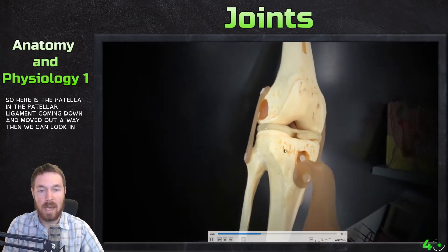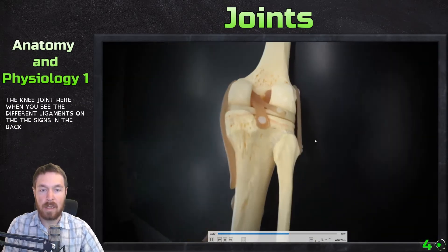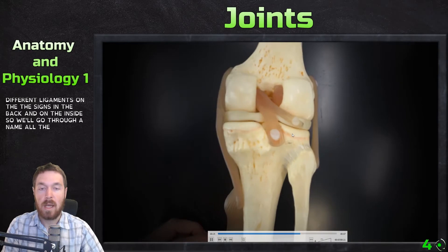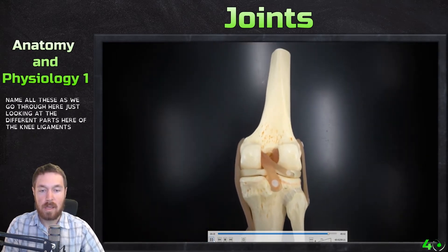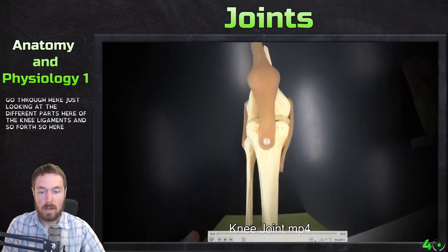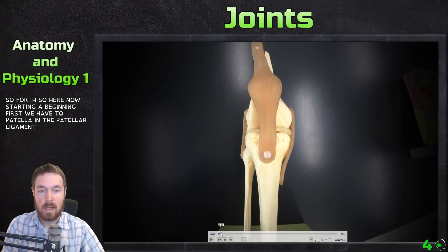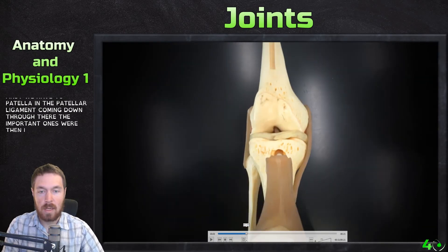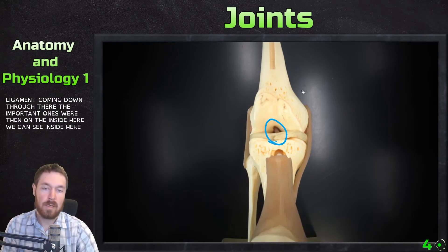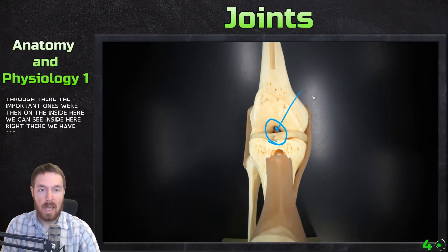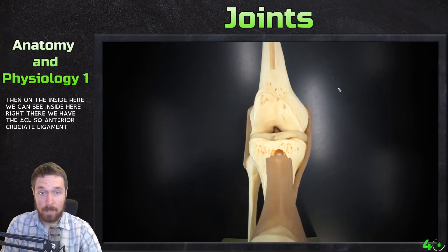If we move that away, we can look inside the knee joint and see the different ligaments on the sides, the back, and the inside. Starting at the beginning, we have the patella and the patellar ligament coming down. Then on the inside, we can see the ACL — the anterior cruciate ligament.